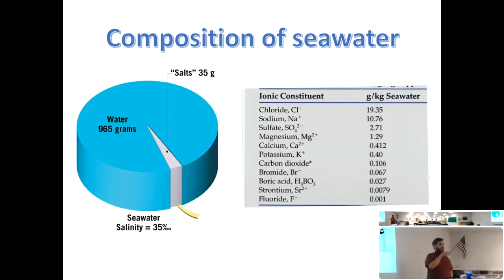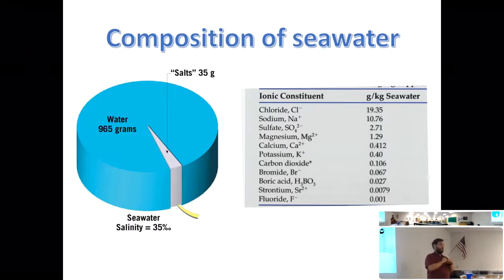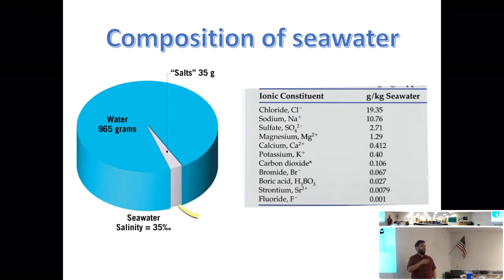Interestingly, some of the most common elements in the continental crust — oxygen, iron, silicon, aluminum — are not highly concentrated in seawater. Is there iron in the seawater table? No. And yet marine organisms need iron — for hemoglobin, for example.